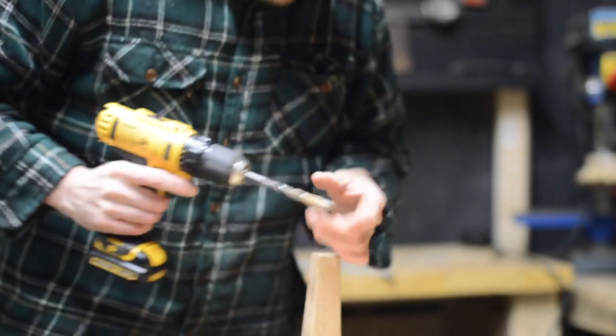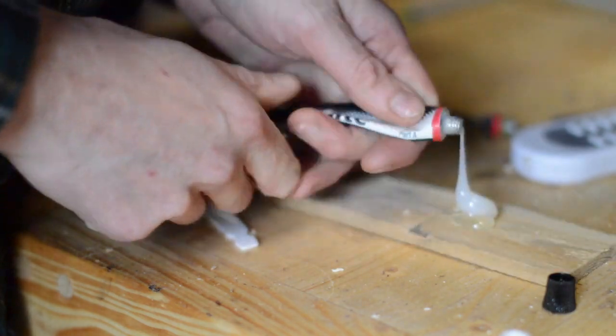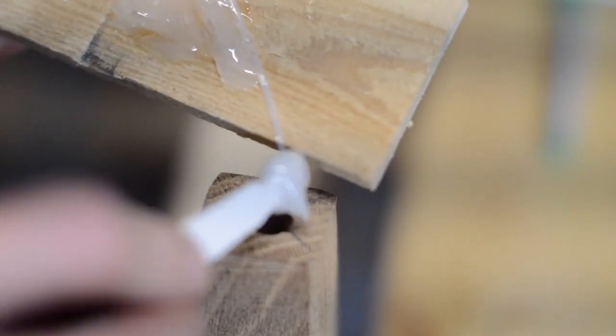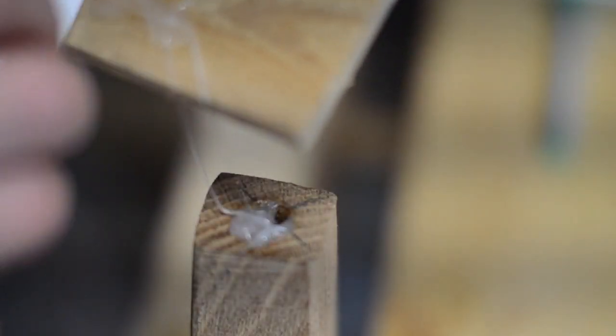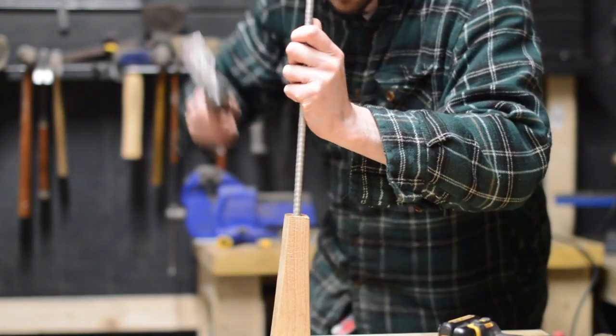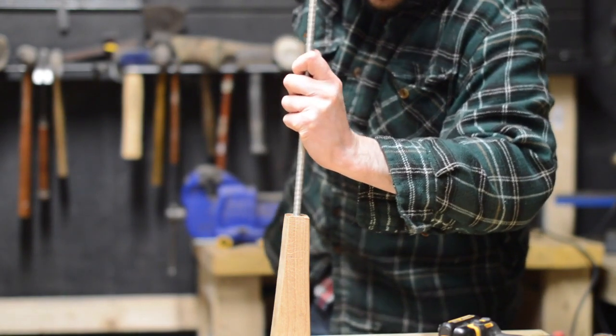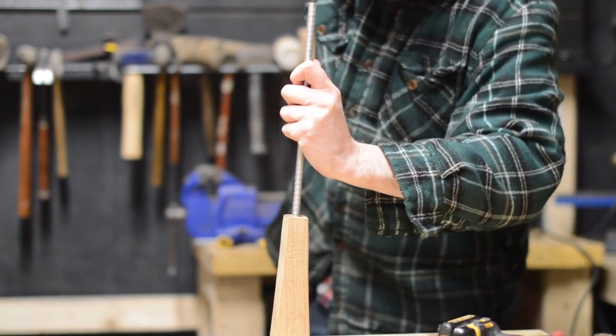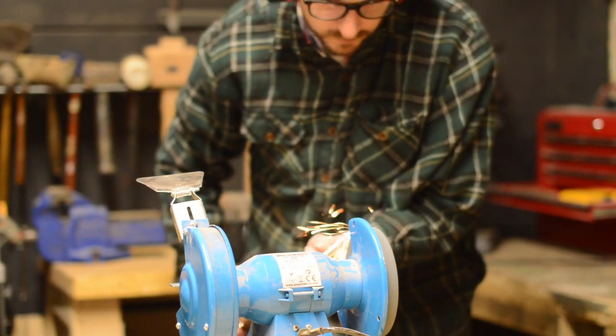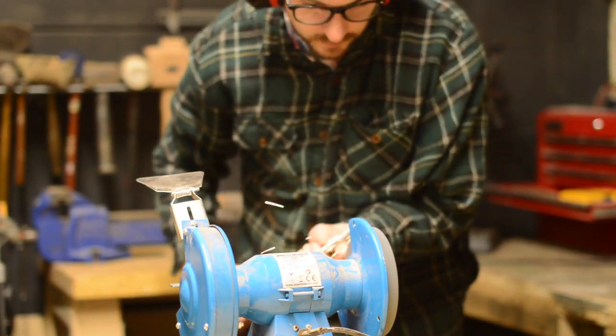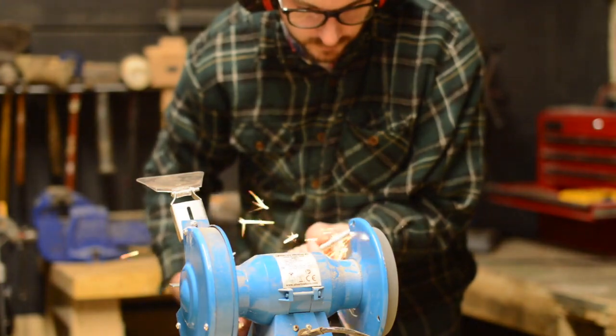With a hole drilled to accept the rod I could mix up some epoxy. The rod is going to be a pretty tight fit in the hole to start with, so the epoxy should be fine to hold it in place. When the epoxy cured I sharpened the end of the spike to make it easier to drive into the ground. It's now a table and a lethal weapon.